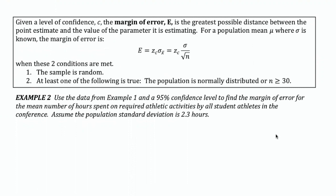Once we know what level of confidence we want in our estimate, the margin of error — capital E — is the greatest possible distance between the point estimate and the value of the parameter it's estimating. For a population mean where the standard deviation is known, the formula for margin of error uses the critical value times the standard deviation divided by the square root of the sample size. Your sample has to be random and at least one of the following must be true.